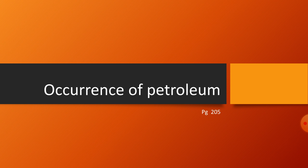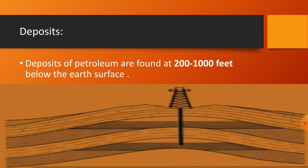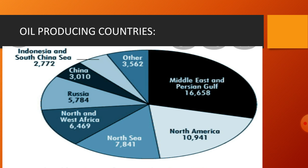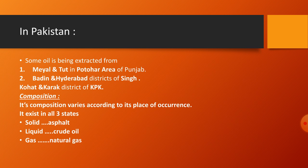Petroleum occurs in the form of deposits, and these deposits are found at a depth of about 200 to 1000 feet below the earth's surface. There are several rich oil-producing countries, the most important of these being the Middle East and Gulf countries: Saudi Arabia, Iran, Iraq, Kuwait, and the United Arab Emirates.